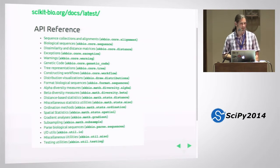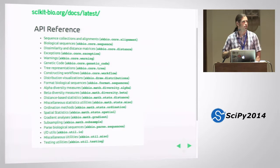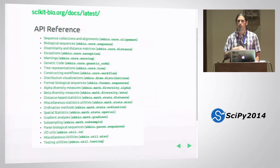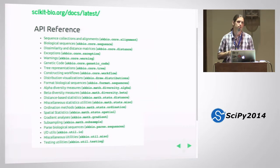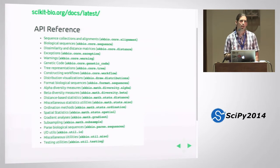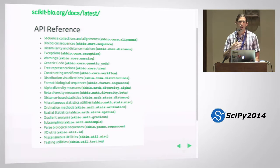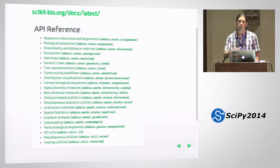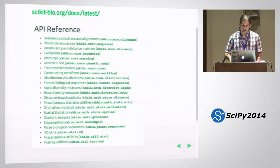The documentation site is listed up there at the top. In addition to these objects and algorithms, we're also implementing some statistical methods that are relevant but not present in places like SciPy because they're very bioinformatics-focused. An example would be metrics for computing alpha diversity or beta diversity for studying biological diversity — so something like the Faith Phylogenetic Diversity metric would be implemented in scikit-bio but probably not in a tool like SciPy.